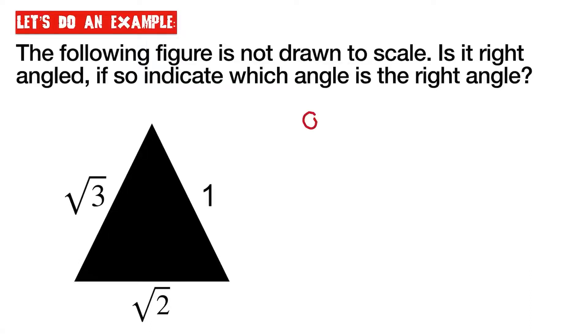Now remember, in Pythagoras' theorem, A squared plus B squared is equal to C squared, where A and B are the two shorter sides. So the first thing that we need to figure out is which out of these three lengths is the longest side. Because if it's the longest side, it's going to be equal to C.